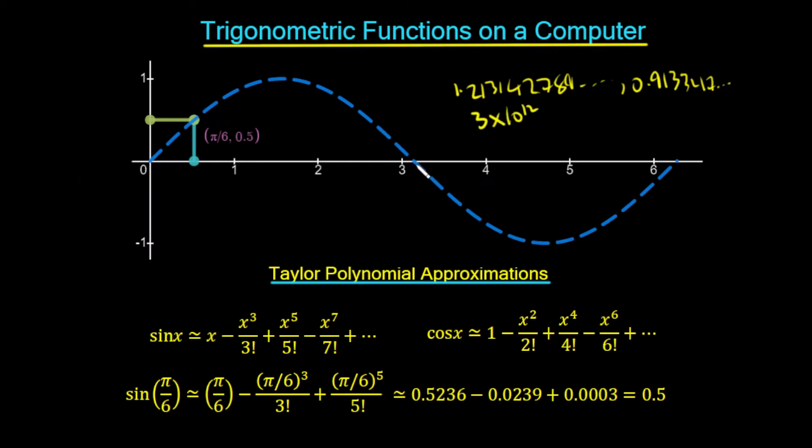So that would be 3 times 10 to the 12 memory locations that we would need in order to represent just one half of this function. We could represent the other half as well, just using the same lookup tables, because the values here for the second half are actually the same as the first half, but they're negative. So we would have approximately equal to, let's say, 3 times 10 to the 12, which would be 3 gig of memory. So we would need 3 gigabytes of memory, just as a rough approximation, in order to represent this single function here accurate to 12 decimal places.